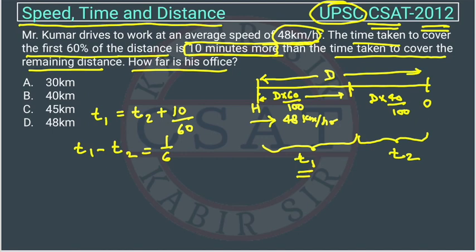How can we calculate T1? T1 will be the distance. Distance is D, we can cancel this 0 with this 0. This will be D into 6 upon 10, divided by speed which is 48.